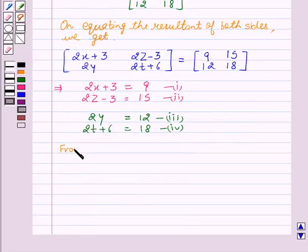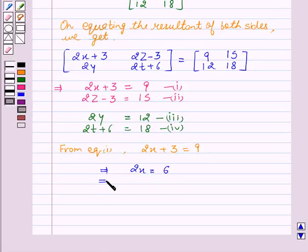From equation first, we have 2x+3 equal to 9. This gives us 2x equal to 6. This implies x equal to 3.